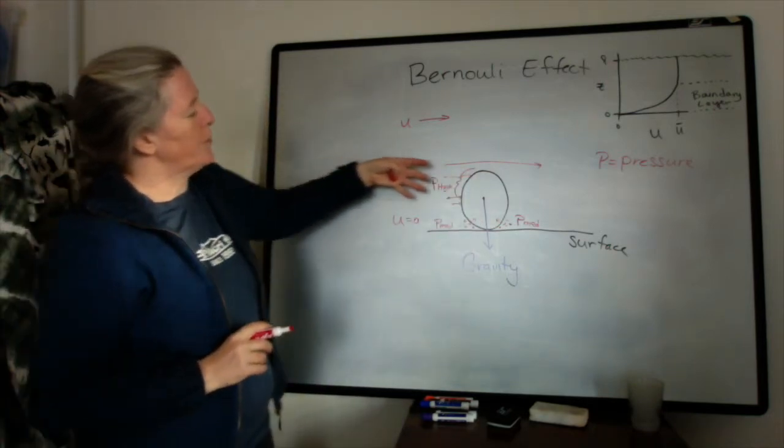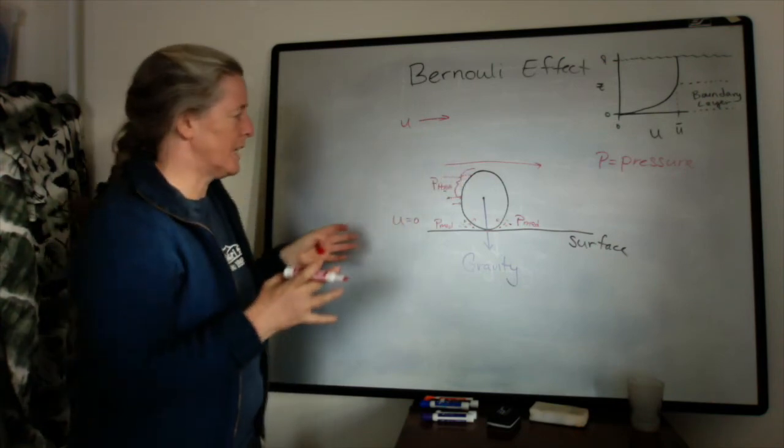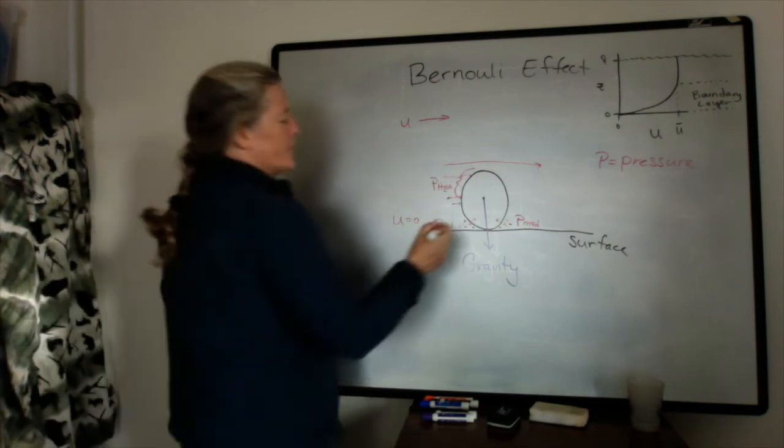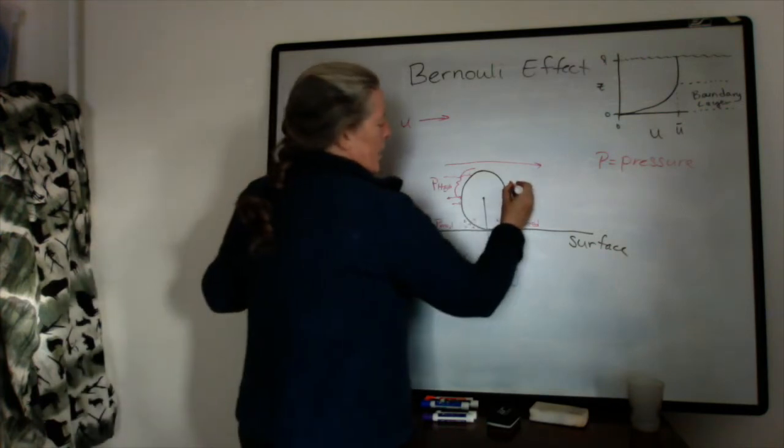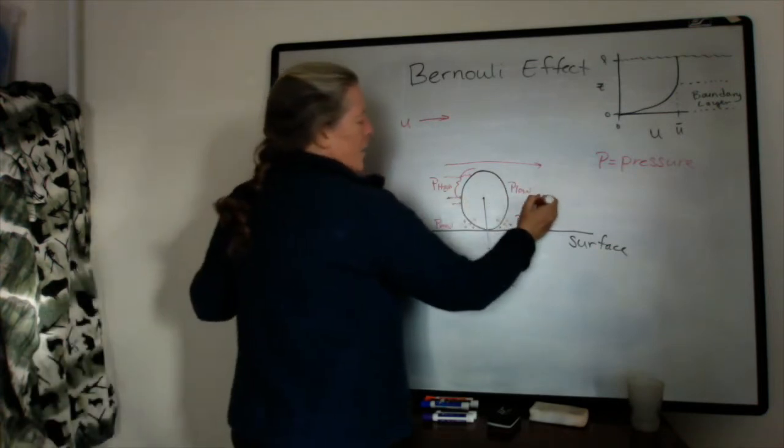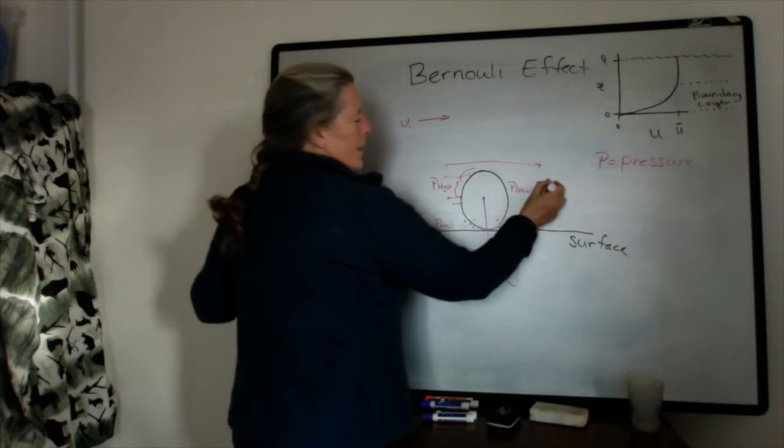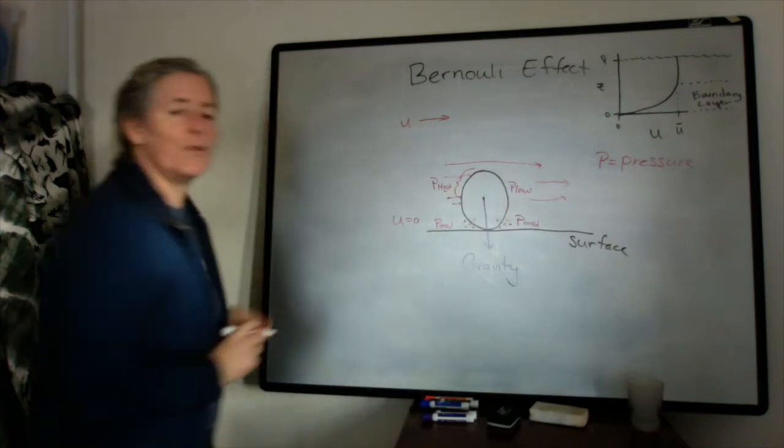Now as that flow impinges on the grain, it can't actually flow through it, it goes around it, and it's still being pulled downstream, so we end up with a low pressure on the downstream side, because any water molecules coming from around the grain are still moving downstream.